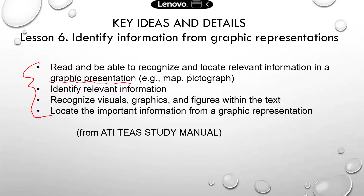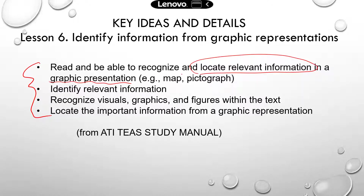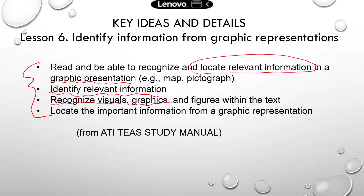Kind of similar to the previous lessons, you need to be able to locate relevant information from a whole paragraph or from a pictograph. That's a very important skill you need to have to do very well with the T's reading section. The second objective is very similar — you should be able to locate information from a text or a graphic representation, recognize visual graphics and figures within the text, and locate important information from graphic representations.